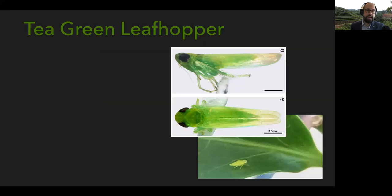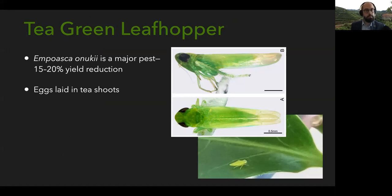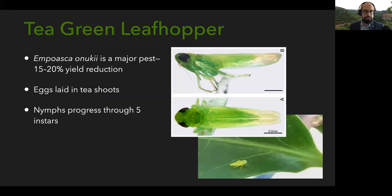The tea plant is attacked by a number of insect pests. One of those insect herbivores is the tea green leafhopper, Empoasca onukii — a major pest on tea plants that can cause up to a 20% reduction in tea yields. It lays its eggs in the tea shoots; when those eggs hatch, they develop into nymphs that are super tiny when they first hatch, less than a millimeter. They grow and molt five times, progressing through five instars and becoming winged adults.